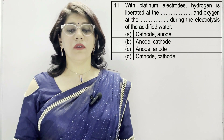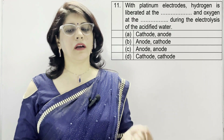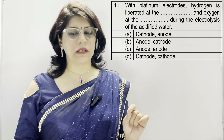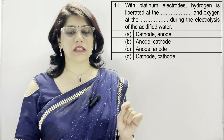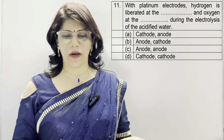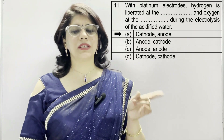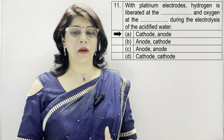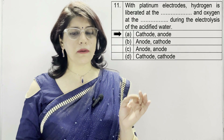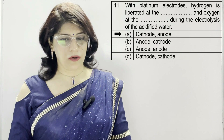In question number 11: with platinum electrodes, hydrogen is liberated at the dash and oxygen at the dash during the electrolysis of acidified water. A: cathode and anode. B: anode and cathode. C: anode and anode. D: cathode and cathode. The correct option is A — cathode and anode. Platinum electrodes are passive electrodes; hydrogen is liberated at the cathode and oxygen at the anode.